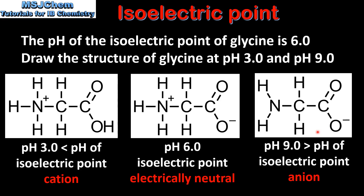Here's the structure of glycine at pH 9.0. At pH 9.0, which is greater than the pH of the isoelectric point, glycine forms a negative ion, which is an anion.